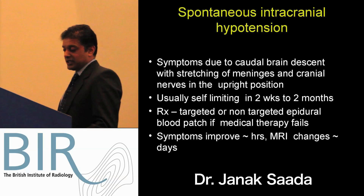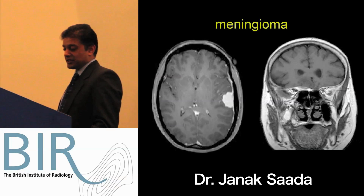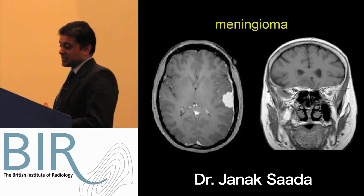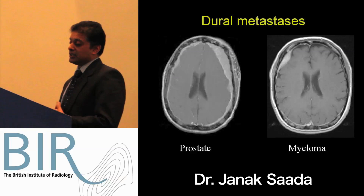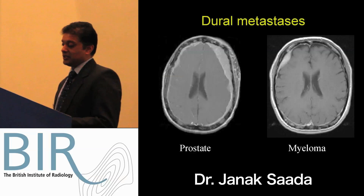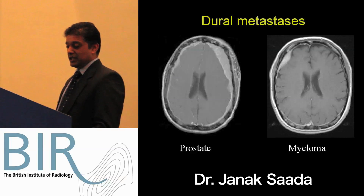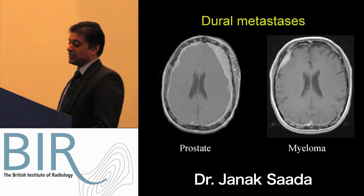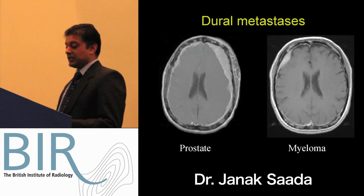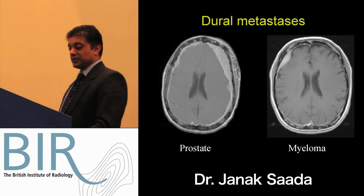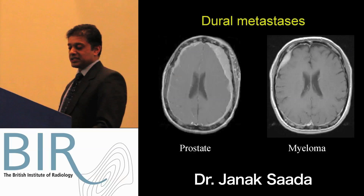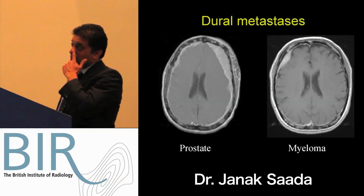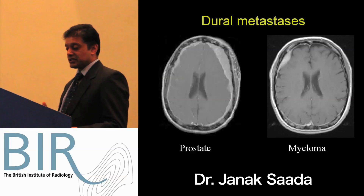Other causes of dural pathology: meningiomas and dural masses have been mentioned. Dural metastasis can produce fairly profound dural thickening, but it tends to be irregular, unlike the smooth pattern seen with intracranial hypotension. In both examples shown, the calvarium is abnormal - one case is metastatic prostate disease which has gone to the bone and busted through into the dura, which is a tough membrane protecting the subarachnoid space. The other is a patient with myeloma where the dura is thickened and relatively smooth, demonstrating that not all smooth dural enhancement is benign. One needs to be careful, but in this case the adjacent bone is also abnormal, making it clear this is metastatic disease.